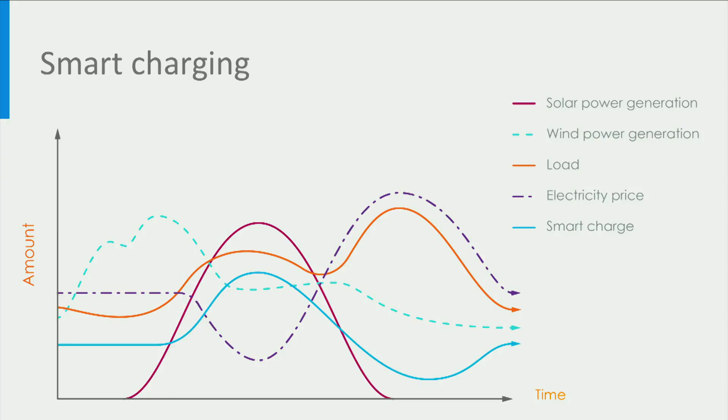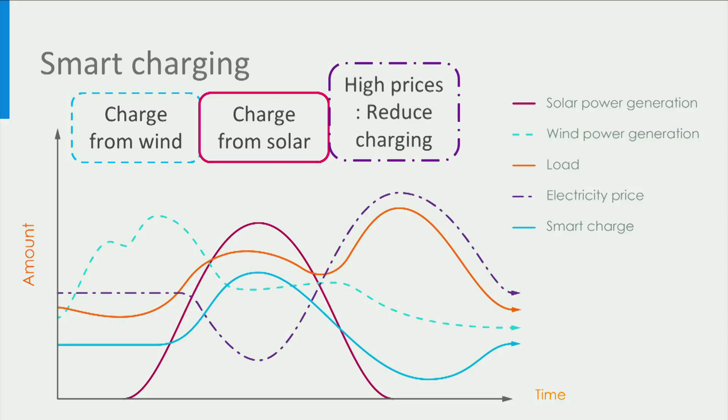While the energy prices and load on the grid are reaching its peak at the end of the day. With smart charging, electric vehicles can be controlled to charge from the wind generation in the morning. Then the charging can be increased to charge from both the solar and wind generation in the afternoon. Finally, the charging power can be reduced in the evening when the loading on the grid and energy prices are high.